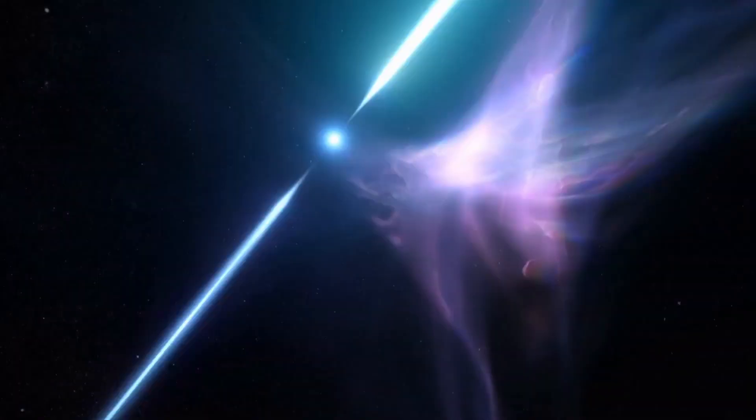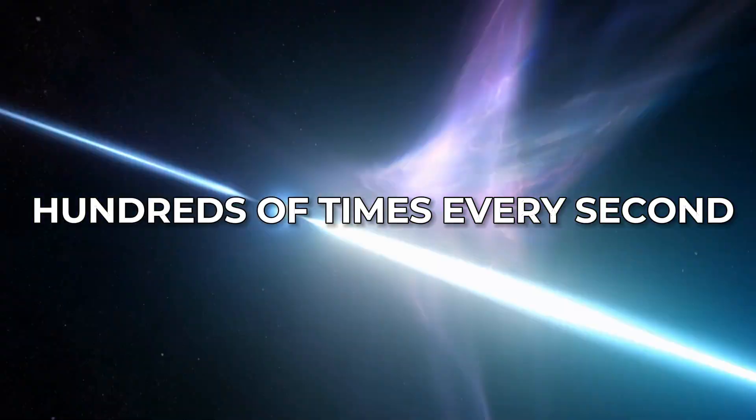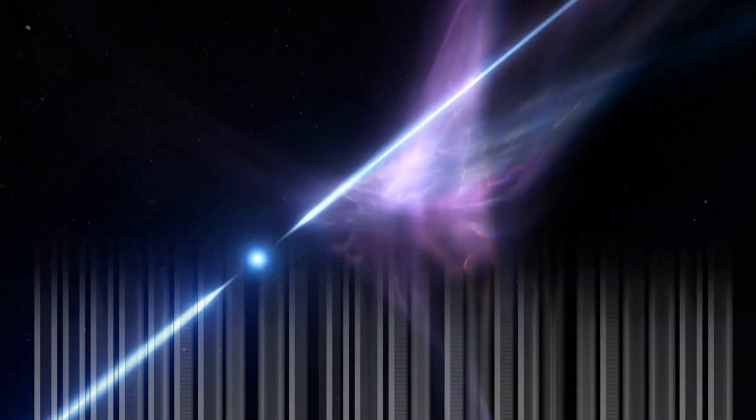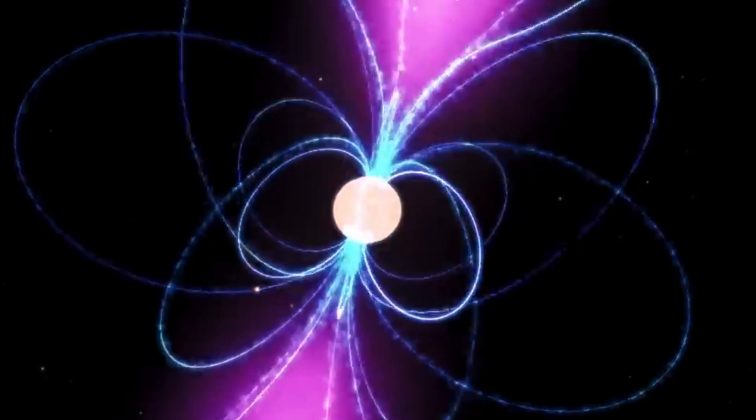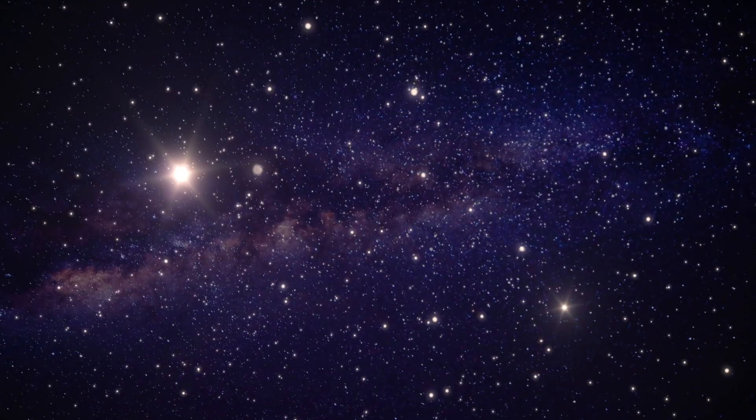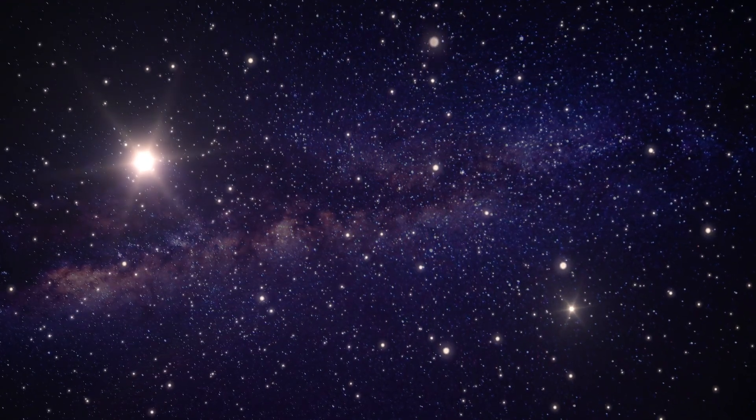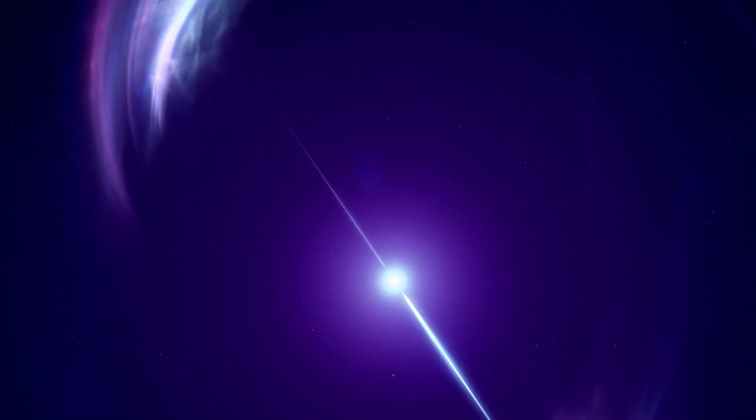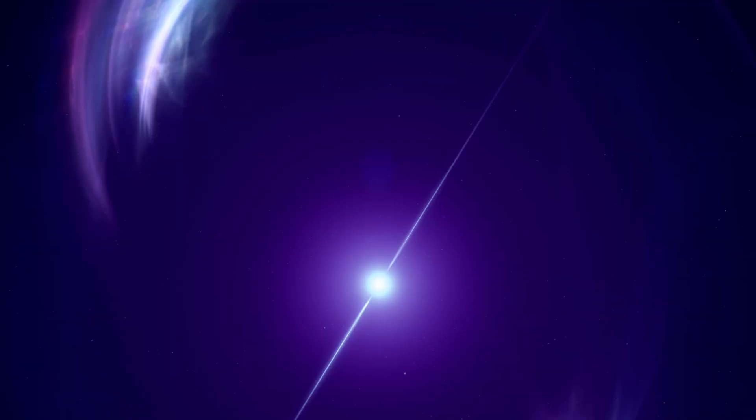Picture this: some whirl around hundreds of times every second. And here's the kicker: they shoot out beams of energy from their magnetic poles, like cosmic lighthouses slicing through the darkness. As they spin, these beams sweep across space, creating a rhythmic pulse of light or radio waves like a cosmic heartbeat.